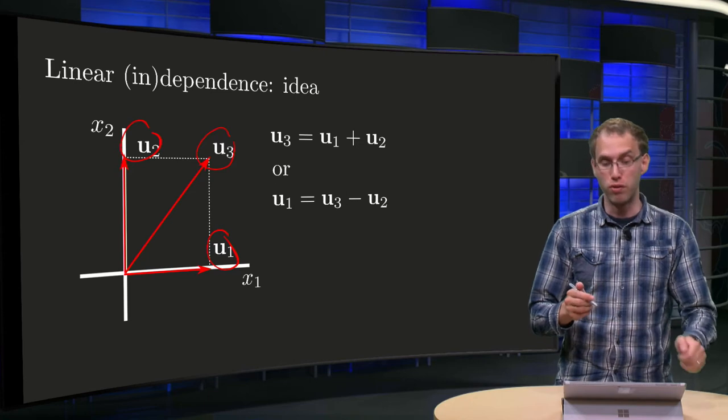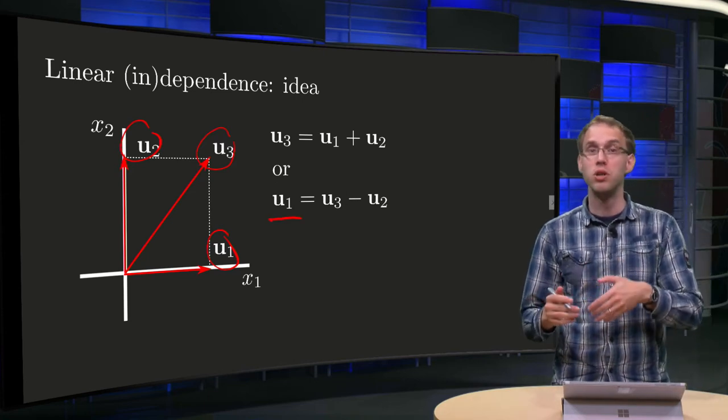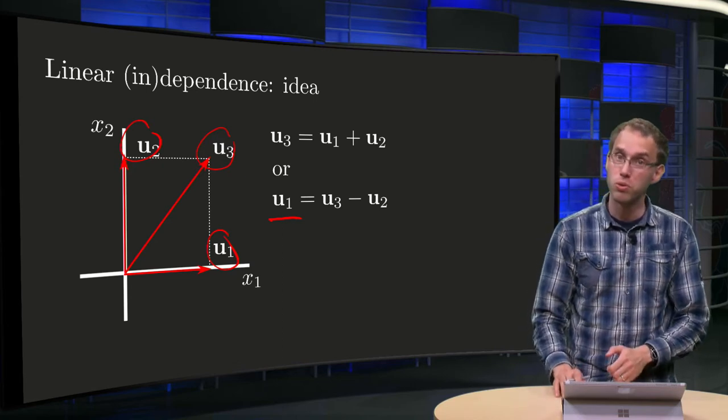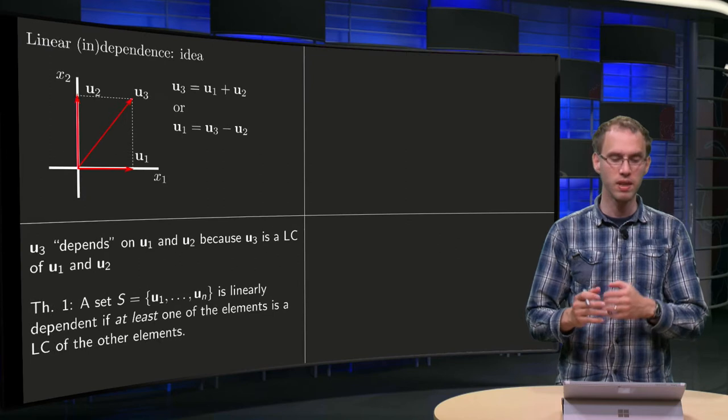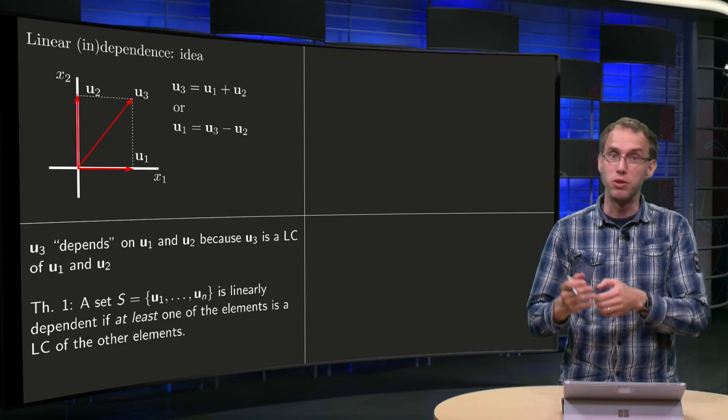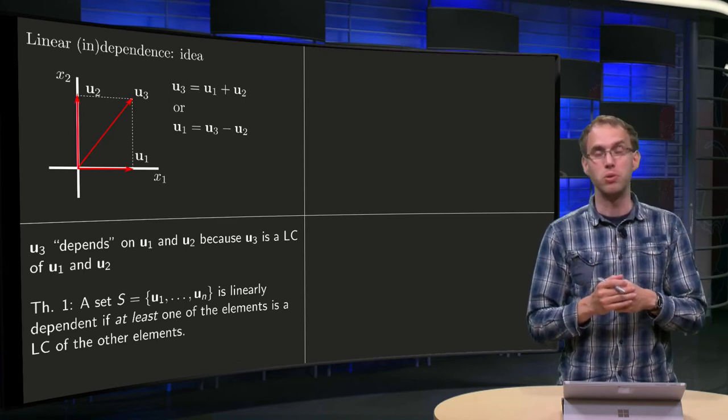However, you can also solve for u1 and you see u1 equals u3 minus u2, so you can also say that u1 depends on u2 and u3. So we say that one vector depends on another, say u3 depends on u1 and u2, if u3 is a linear combination of u1 and u2.